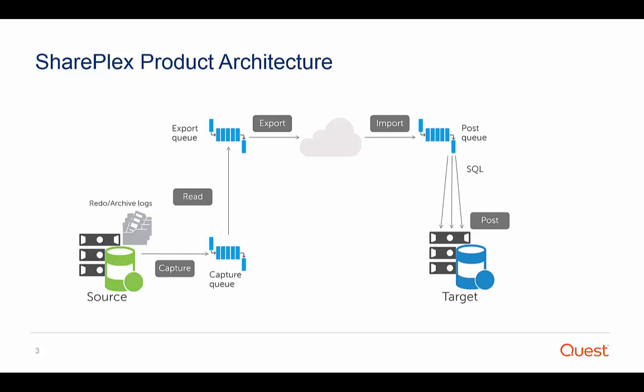First, let's take a look at the overall architecture. SharePlex for Oracle provides high speed, log-based replication between Oracle instances on Sun, AIX, HP, Linux, and Windows platforms. The illustration on the screen explains the basic SharePlex replication process. On the source system, the capture process reads the Oracle archive or redo logs, then makes a copy of the data and sends it to the capture queue. The read process reads the capture queues and prepares the data for transport across the network, then places that data into the export queue.